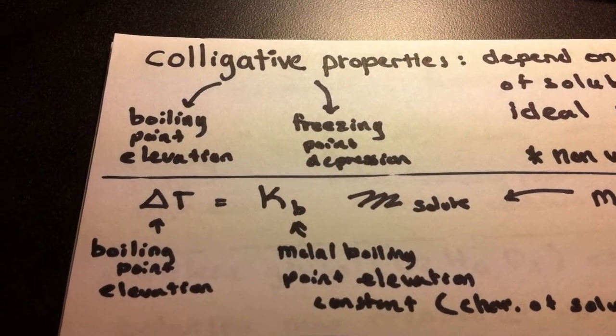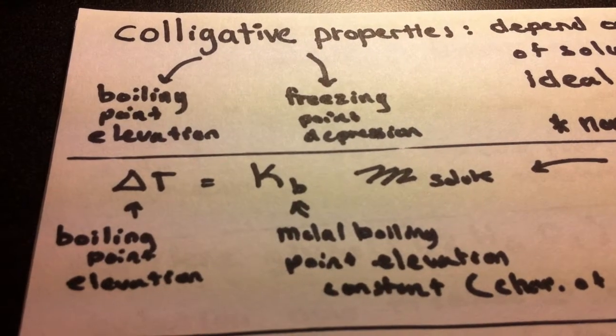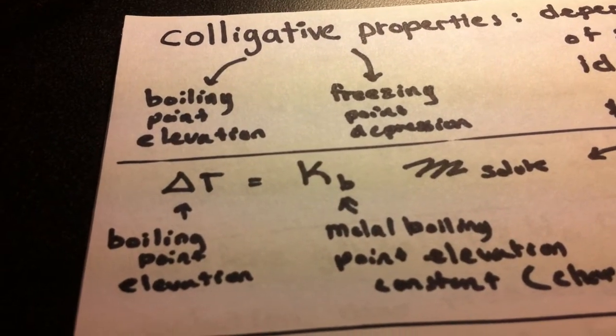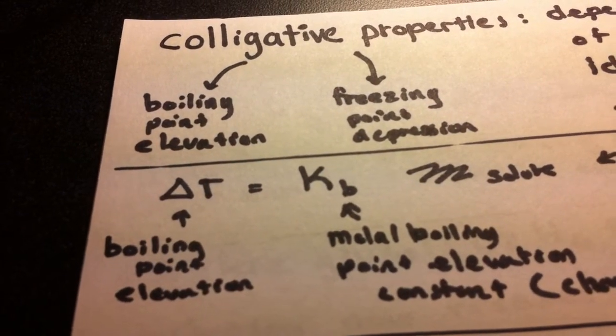Boiling point elevation is exemplified by this equation: delta T equals KB times M solute. Delta T refers to the boiling point elevation, how much higher our boiling point is going to be if we add a solute.